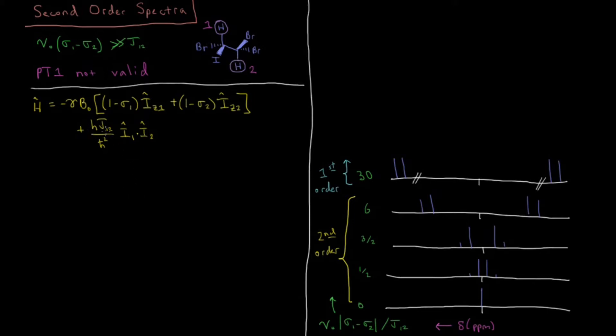Okay, and in the previous videos we would have just called this our reference Hamiltonian H0, we would have called this our perturbation H1, but we can't do that now because it's not really a perturbation, because it's very small relative to the distance between these two peaks. So the perturbation actually isn't small.